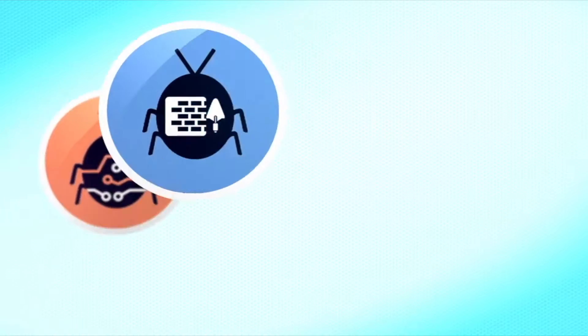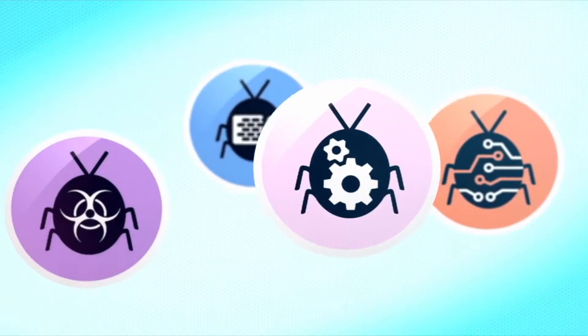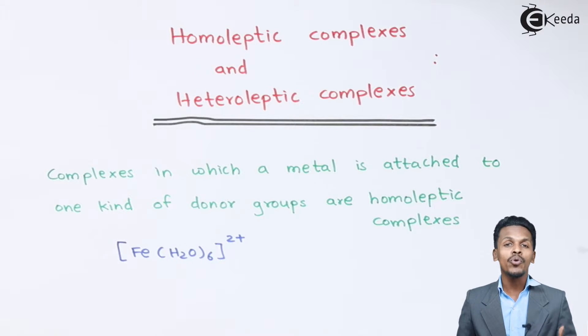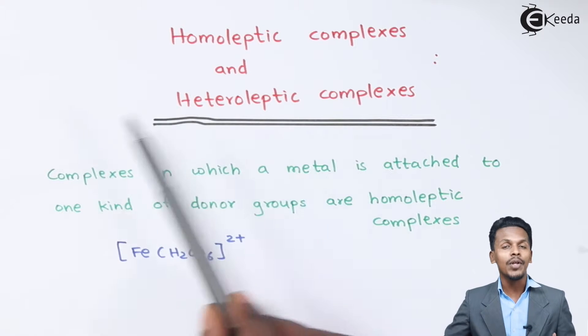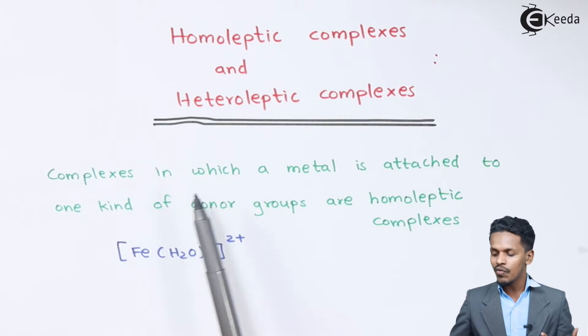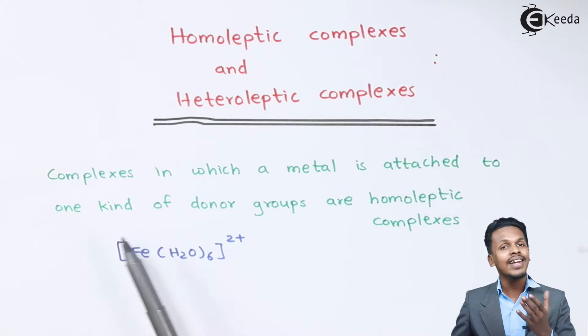So friends, now we are going to talk about homoleptic and heteroleptic complex. So what are these complexes? Let us understand with the help of the definition. The complexes in which a metal is attached to one kind of donor groups are known as homoleptic complexes.